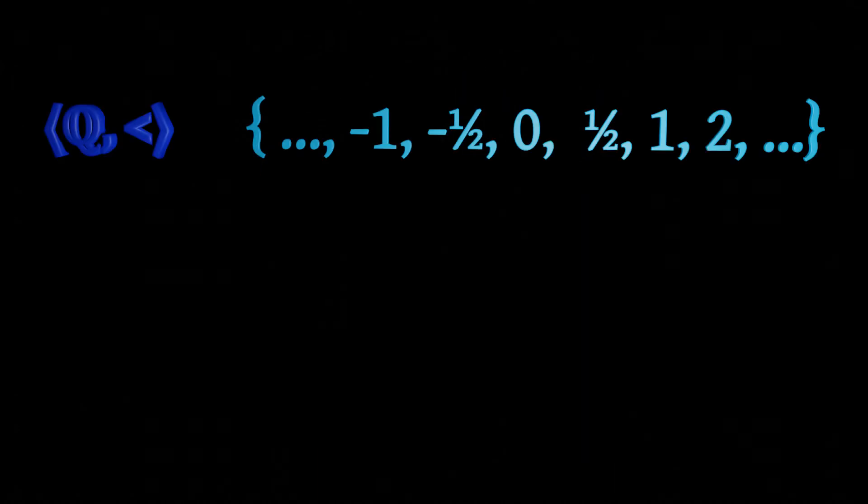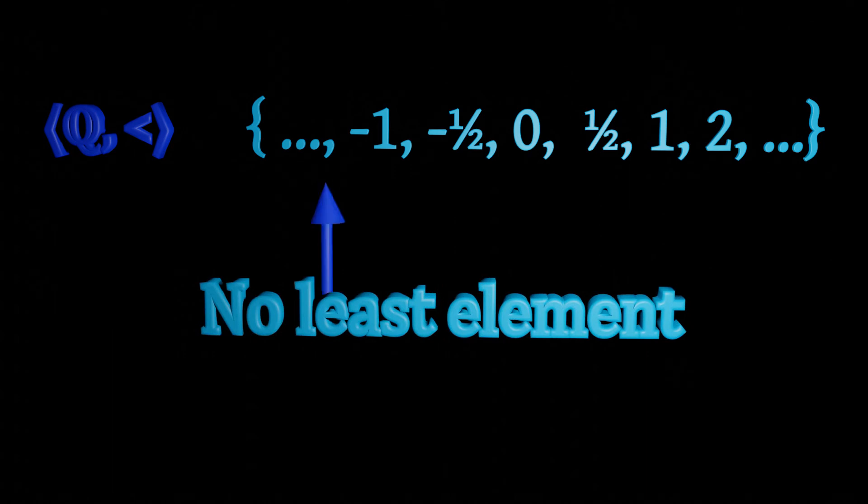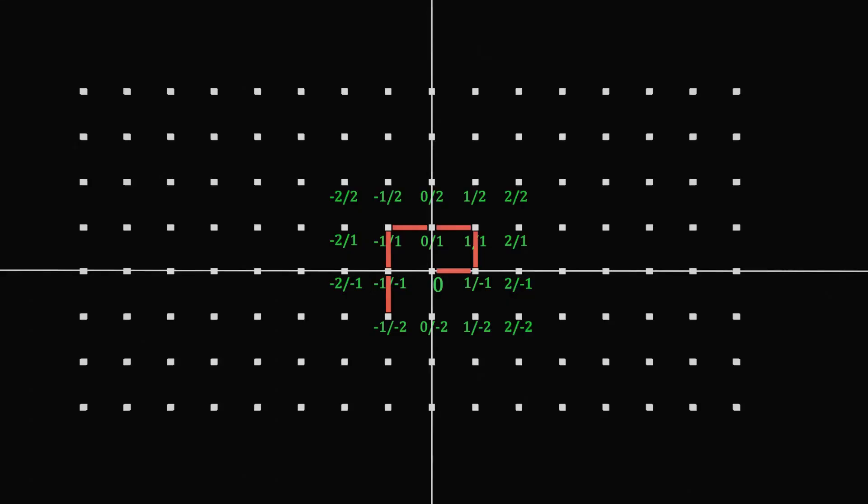The set of the rational numbers with their standard ordering is not a well-ordering. However, we can easily find well-orders on the rational numbers without using the axiom of choice.